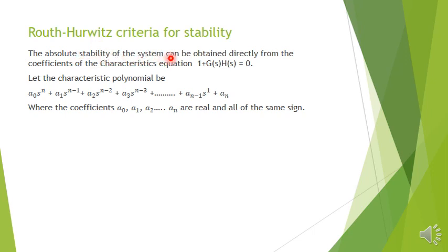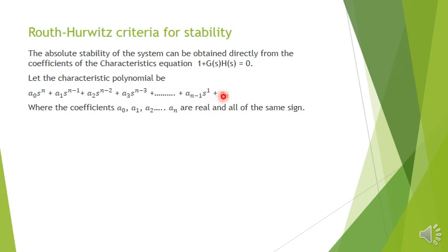According to the Routh-Hurwitz criteria, absolute stability of a system can be obtained directly from the coefficients of the characteristic equation, which is 1 + G(s)H(s) = 0, i.e., equating the denominator polynomial to zero. Let the characteristic polynomial be: a0*s^n + a1*s^(n-1) + a2*s^(n-2) + ... + an, where a0, a1, a2, ... are real coefficients all of the same sign.